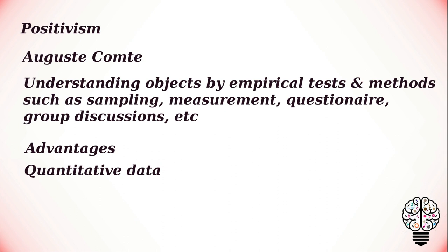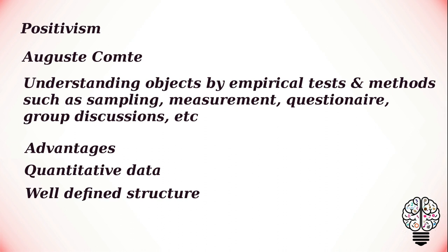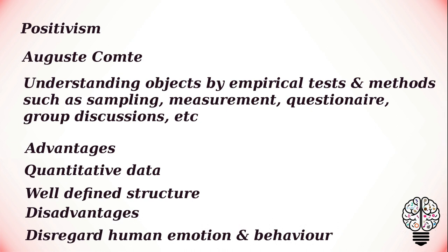Quantitative research is more scientific in its methods and provides objective information that researchers can use to make scientific assumptions. Positivism follows a well-defined structure during studies and discussions. Positivists believe that since there is a set of laws and rules followed, there will be minimum room for error.